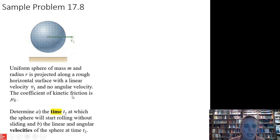They give us the coefficient of kinetic friction, represented by μk. Determine the time at which the sphere will start rolling without sliding and the linear and angular velocities of the sphere at that time.